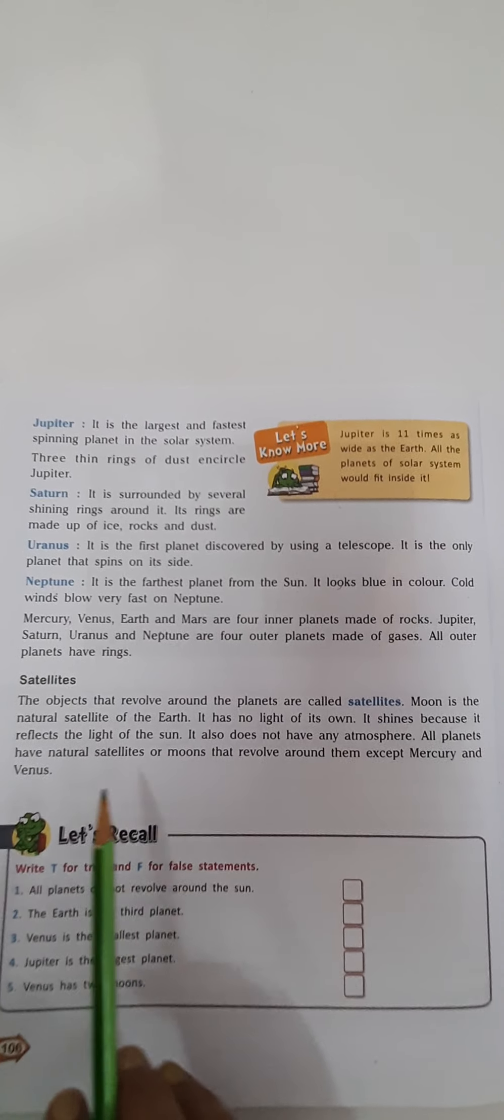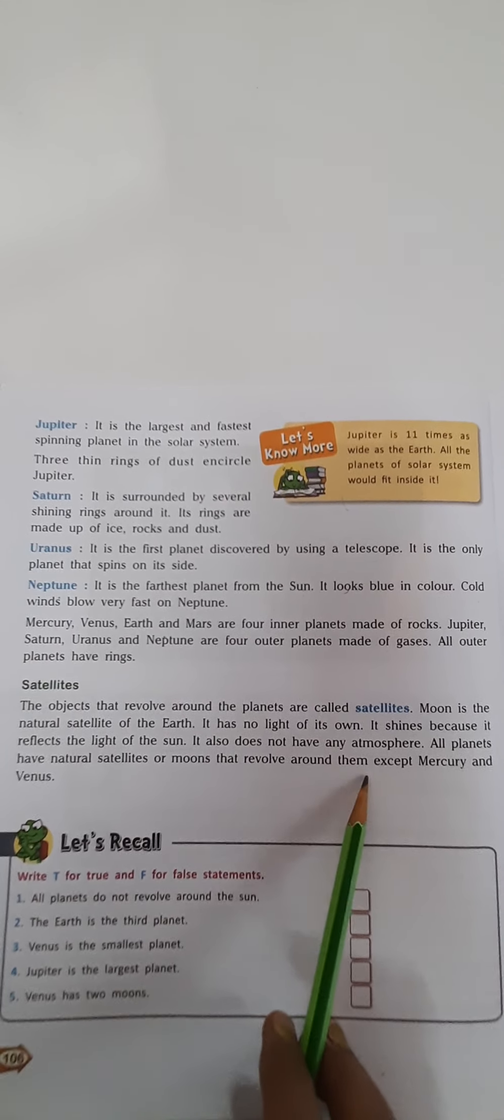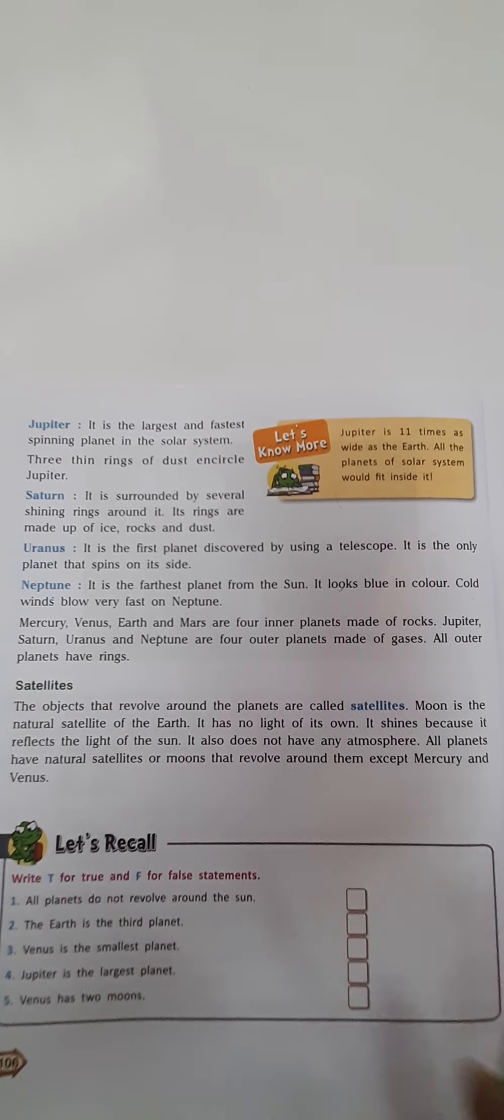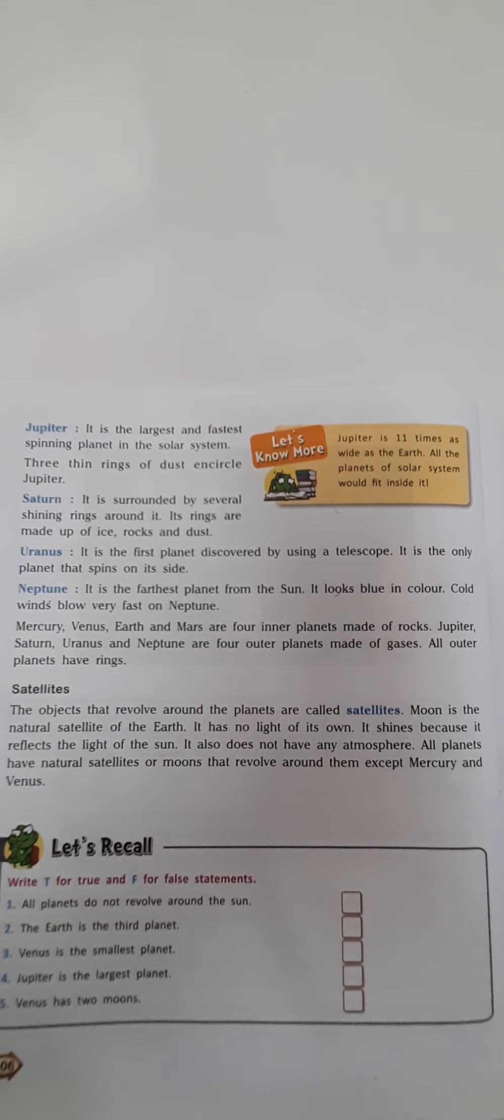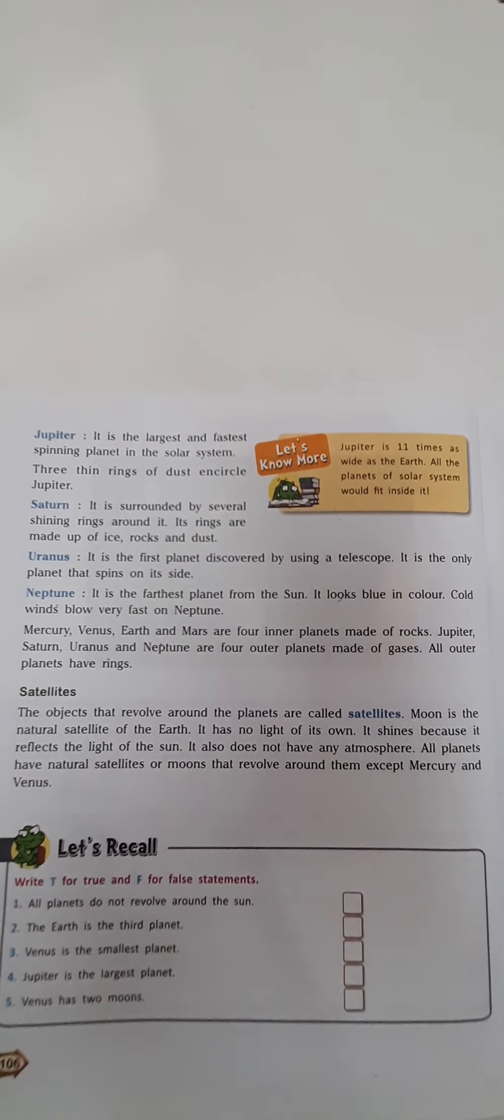All the planets have natural satellites or moons that revolve around them except Mercury and Venus. Mercury and Venus do not have any satellites of their own, but other planets have their natural satellites which revolve around them.